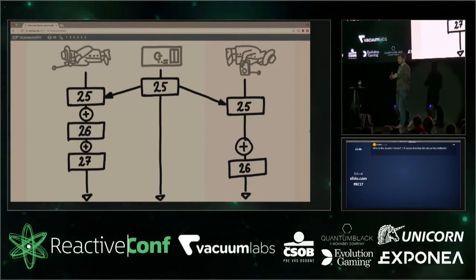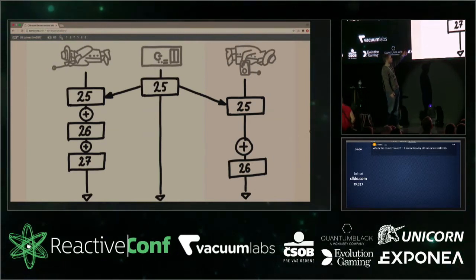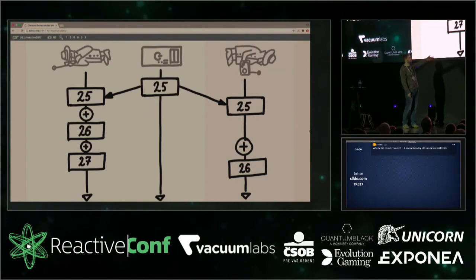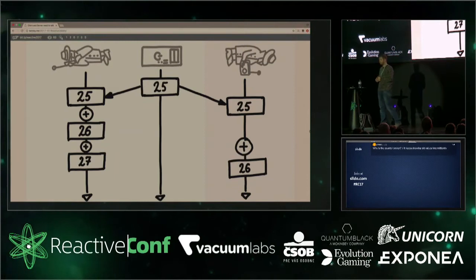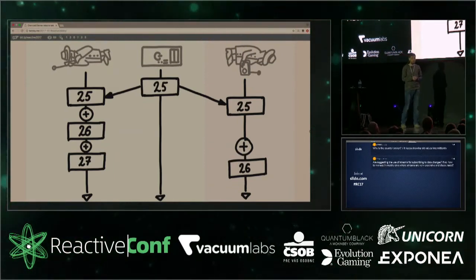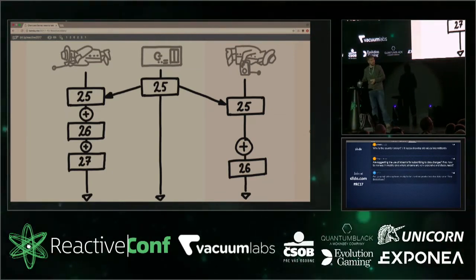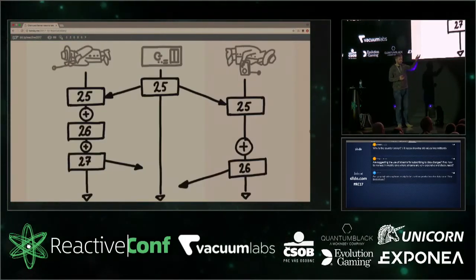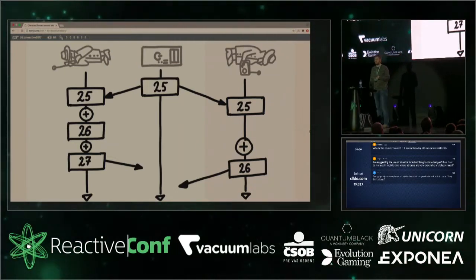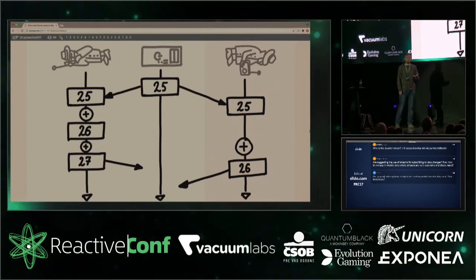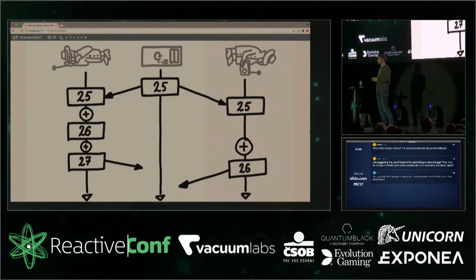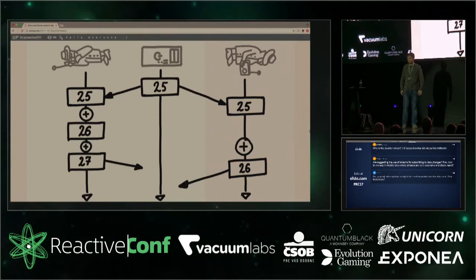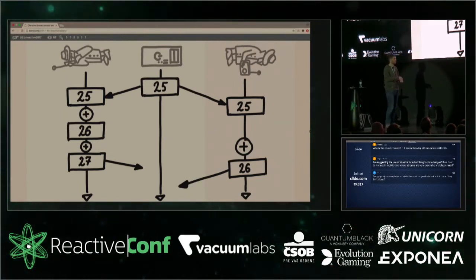In our counter example: the counter has a value, two users on two devices fetch that value, one clicks twice and the other clicks once. Now we have three machines each holding different values — 25, 26, 27. Which one is more true? Actually all of them are true. There's no single answer anymore. Time is relative as well: who clicked first? We can't know and it doesn't actually matter. What matters is who gets to the server first, and unfortunately nobody controls that.